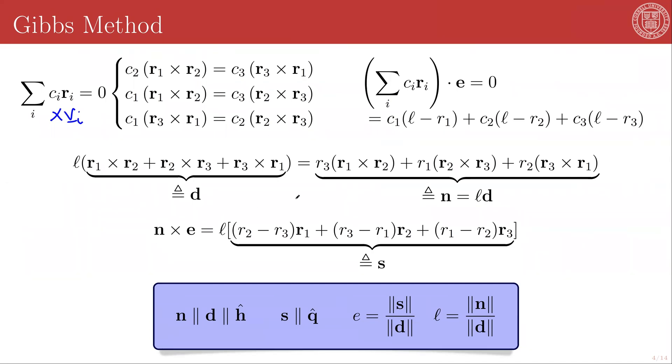Next, we are going to cross this newly defined n vector with the eccentricity direction, and we will again make use of the fact that e dotted into R is equal to the semi-latus rectum minus the orbital radius magnitude R. To make this simplification, we will factor out the semi-latus rectum, and everything that remains, we will define as the new vector s.